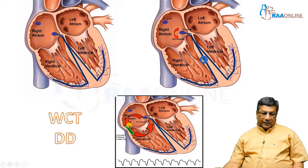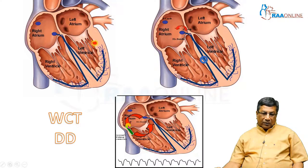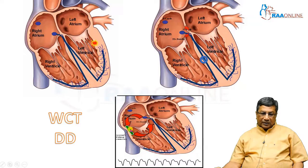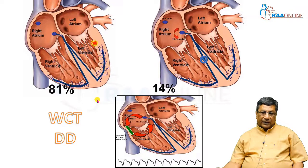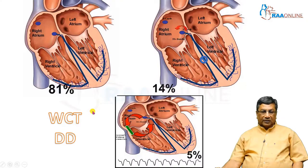The next important cause involves the accessory pathway. In orthodromic tachycardia, anterograde conduction is through the normal conduction system and retrograde through the accessory pathway — this is narrow QRS. Whereas in antidromic tachycardia, supraventricular impulses conduct anterogradely through the accessory pathway and retrogradely through the normal pathway. Because the accessory pathway connects the muscle, anterograde conduction goes through muscle, resulting in wide QRS complex tachycardia. Among them, the commonest is ventricular tachycardia, followed by SVT with bundle branch block, followed by antidromic or pre-excited tachycardia.